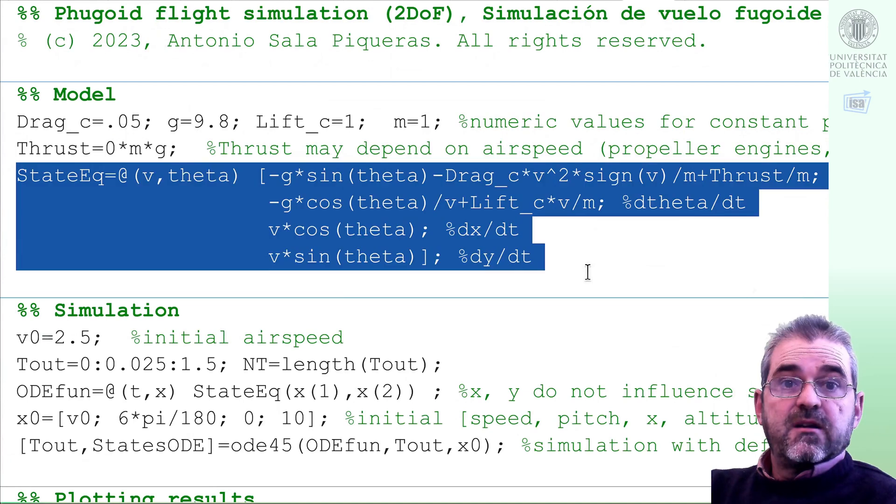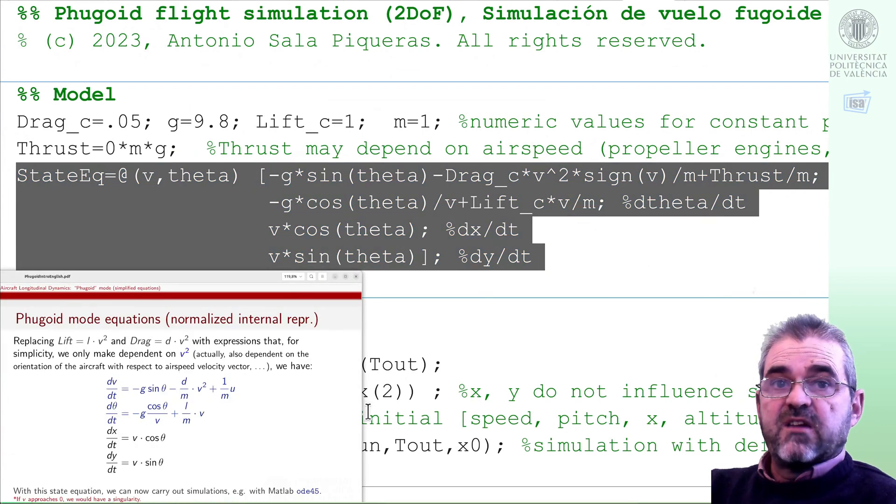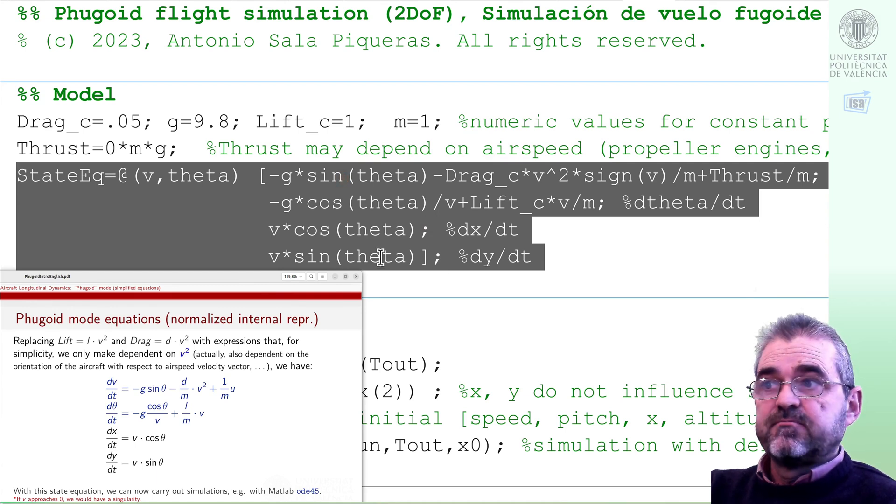So the thing is that introducing the model is basically copying the equations to MATLAB in this way. If we copy line by line the four equations, we get the code we have highlighted in the MATLAB window. As everything in the right-hand side of the four equalities depends only on v and theta, these are the two arguments of this state_eq function I defined in MATLAB. So, good. We have finished with the model.